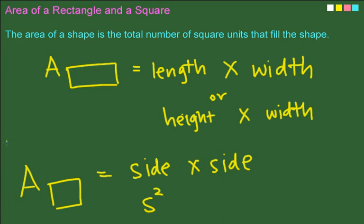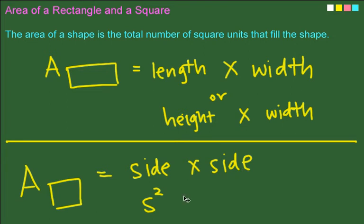Here, I'm going to give you two seconds to memorize this formula. Area of a rectangle is length times width or height times width. Area of a square is side times side or side squared. You have it memorized? I'm going to take it away now.